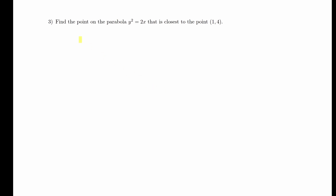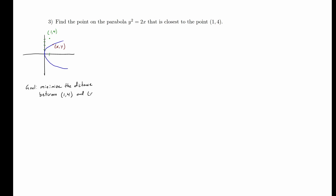Moving on: find the point on the parabola y squared equals 2x that is closest to the point (1, 4). The diagram is a graph. y squared equals 2x is a parabola that opens to the right, passing through the origin. The point (1, 4) doesn't lie on the graph. Any point on the parabola can be labeled (x, y), and we want to find which one minimizes distance to (1, 4). Closest means we want to minimize distance.